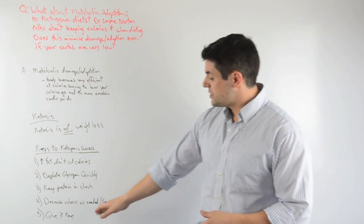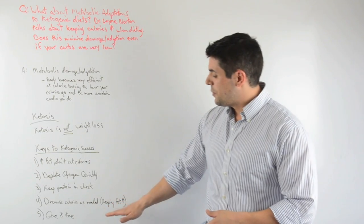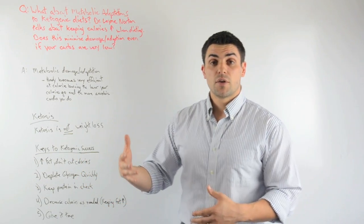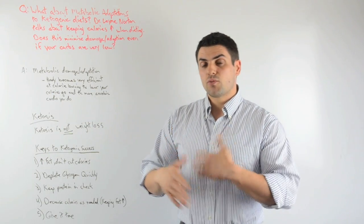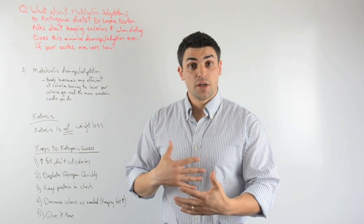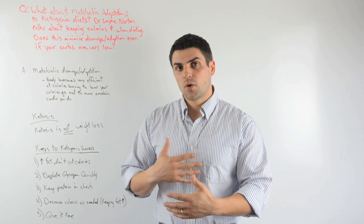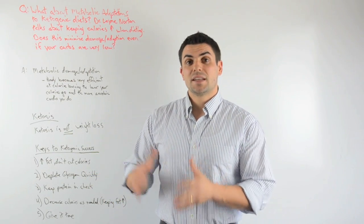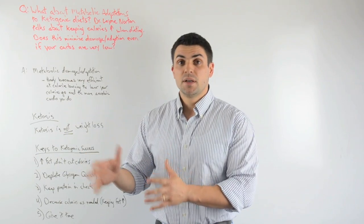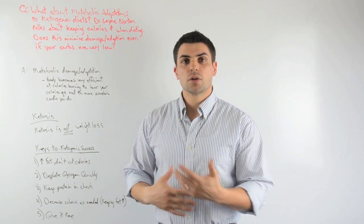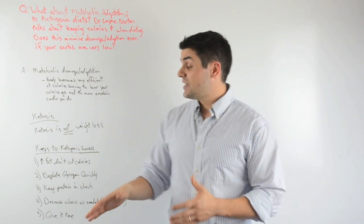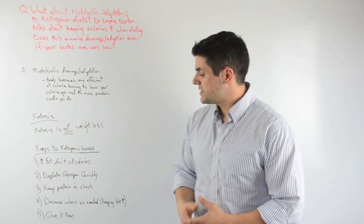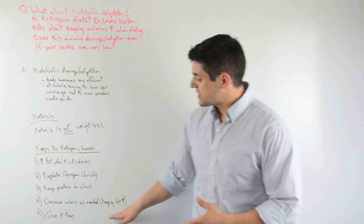Number four is to decrease calories as much as needed but keep your fat high. As you start this adaptation process, once you ramp up your exercise and start feeling good, then you can lower your calories slowly, just as if you were on any other normal sort of diet. But the key is to get your calories up, get your body to stabilize. You're probably going to start losing fat naturally, even at this higher calorie intake, because of the mechanisms of ketogenic diets. But then you want to slowly decrease calories.